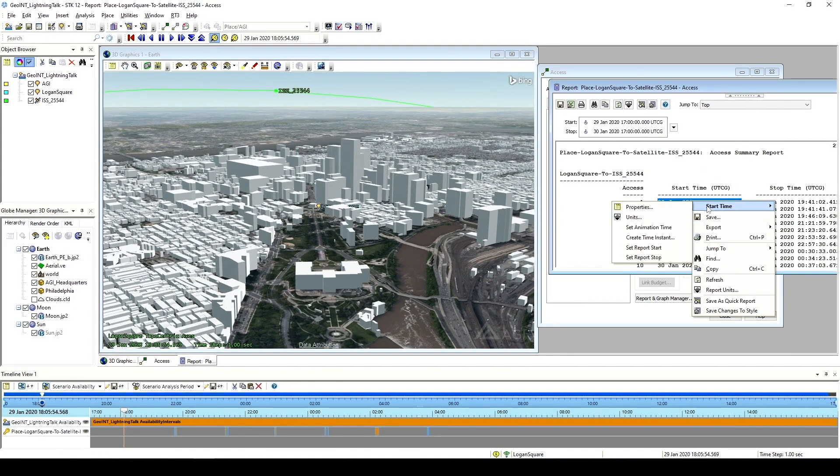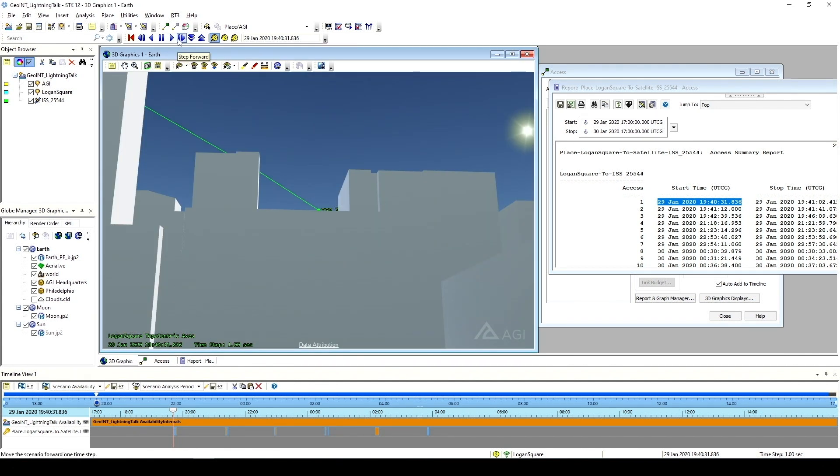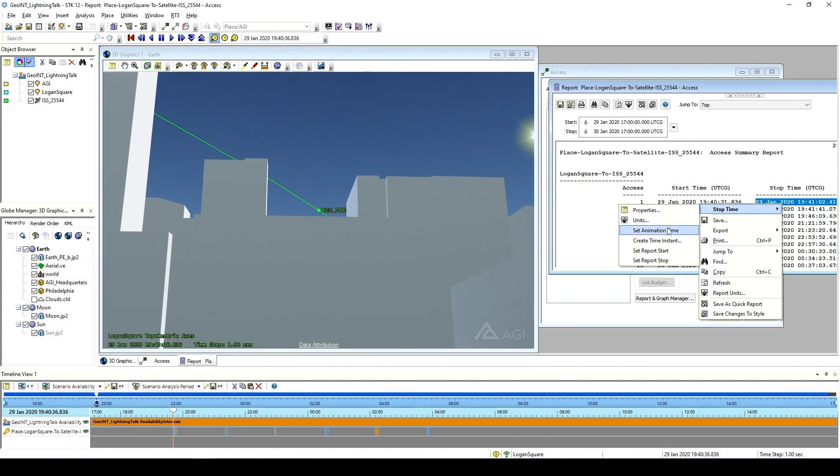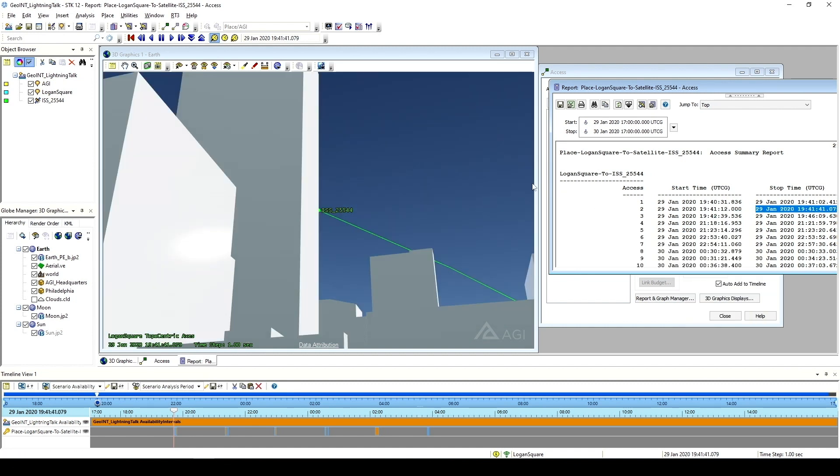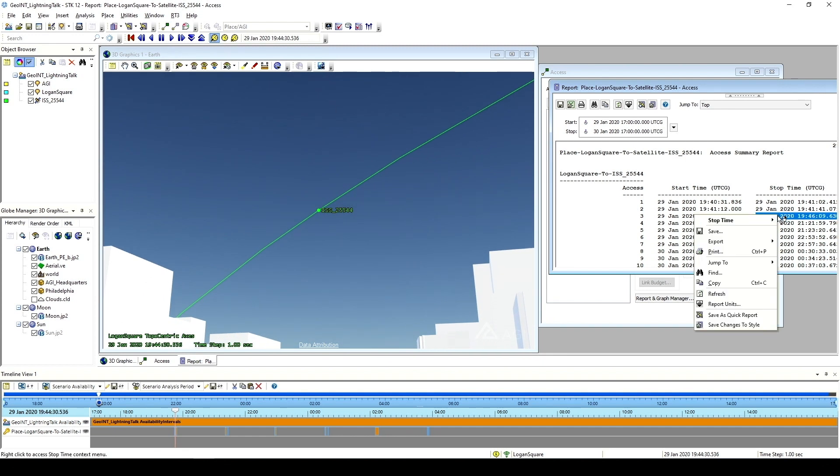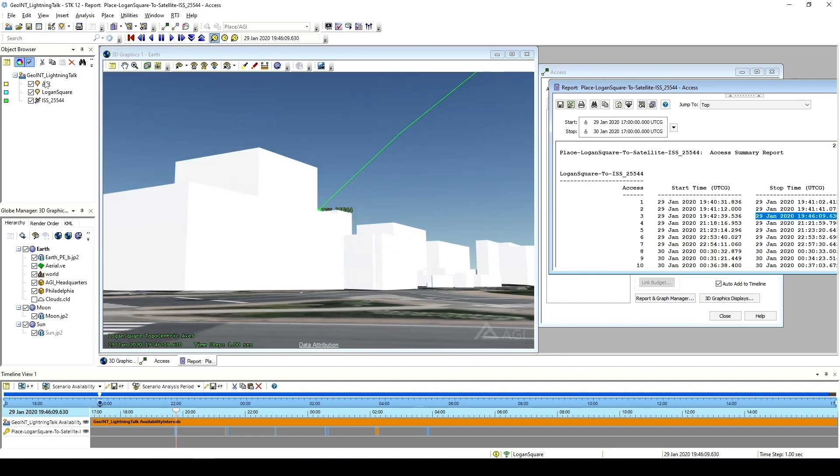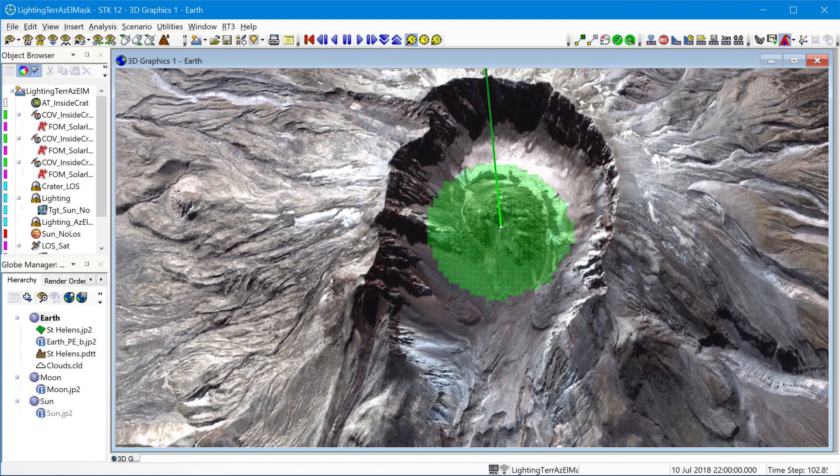Those 3D tiles can be tiles that you have locally on your workstation, or if you own AGI's Geospatial Content Server, you can stream those tiles from the GCS. Or also, if you happen to be a subscriber to Cesium Ion online service, then you can create an asset collection on Ion and stream your 3D tiles from that collection and use those as part of your analysis to do line of sight constraints.